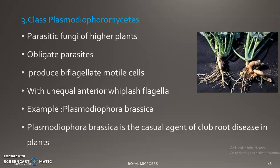To summarize, Plasmodiophoromycetes are parasitic fungi of higher plants, obligate parasites, producing biflagellated cells with unequal, anteriorly placed, whiplash-type flagella. An example is Plasmodiophora brassicae, which is the main agent of club root disease in plants — shown here is the diseased condition compared to the normal root.